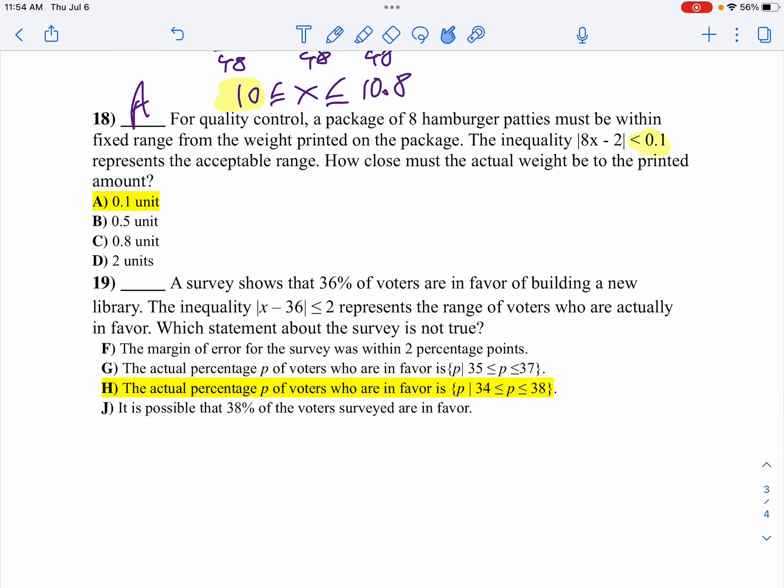And in 19, it says, a survey shows that 36% of the voters are in favor of building a library. So this inequality is X minus 36 is less than or equal to 2 represents the range of voters who are actually in favor. Which of the statements above the survey is true? Well, let's get rid of the absolute value. So I'm going to say negative 2 is less than X minus 36, which is less than or equal to 2.